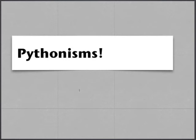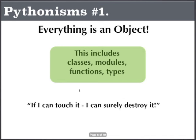Now, to understand object-oriented paradigms in Python, we need to know about what you call Pythonisms. First thing in Python — Python is a 100% pure object-oriented language. What I mean to tell you is that anything and everything in Python is an object.